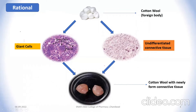The weight of the cotton wool will be greater than the initial weight because giant cell infiltration and undifferentiated connective tissue get deposited on the wool. The difference between the initial and final weights gives you the net dry weight of the connective tissue associated with the cotton pellet, which is a direct indication of the anti-inflammatory activity of the drug.